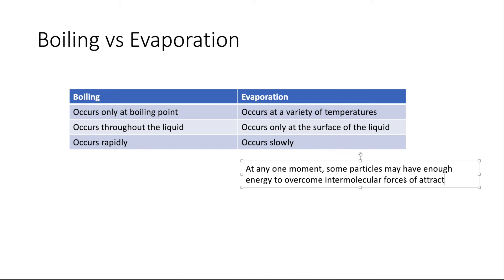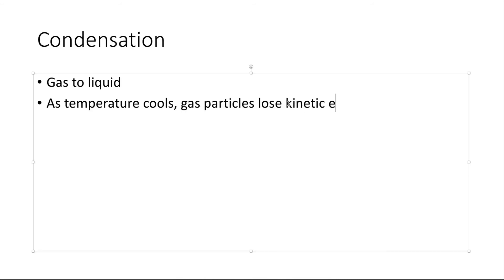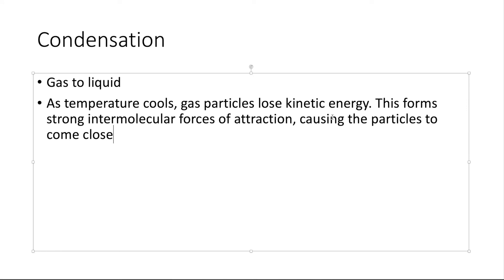For condensation, as particles, usually water, when it comes into close contact with a cold surface, heat energy is given out by the gaseous water particles known as water vapor. And as the temperature drops, the particles lose energy and move slowly. Therefore they are able to come together and form intermolecular forces of attraction, forming liquid that attaches onto a surface. That's called condensation.